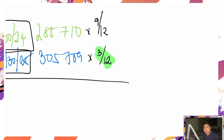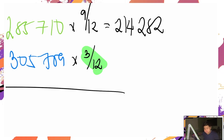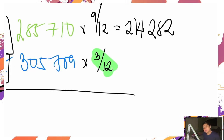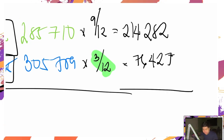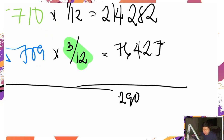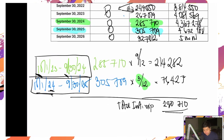So pag minultiply ko: 285,710 times 9 over 12 = 214,282. Tapos 305,709 times 3 over 12 = 76,427. Total: ang lalabas po dyan ay 290,709. Yan na yung total interest expense natin for the year 2024.